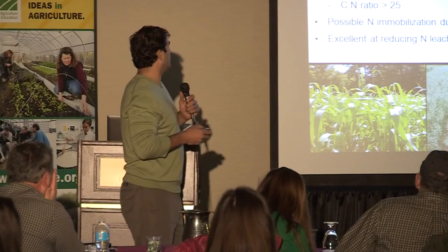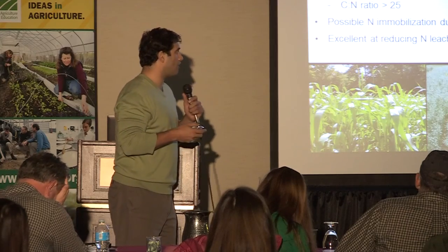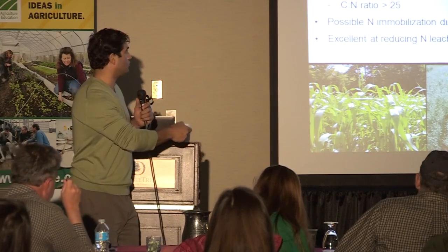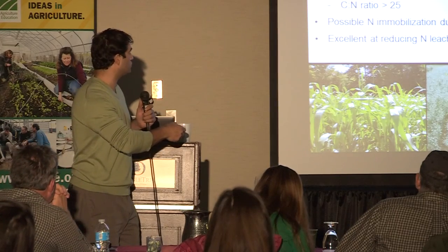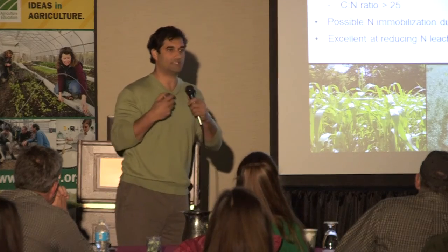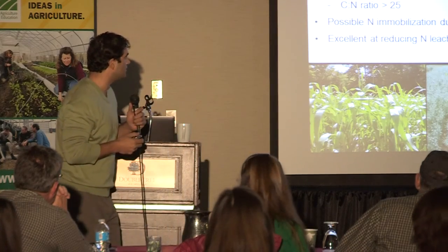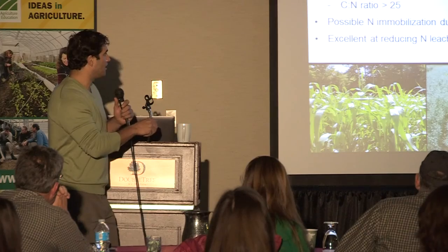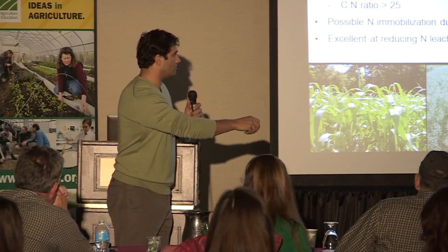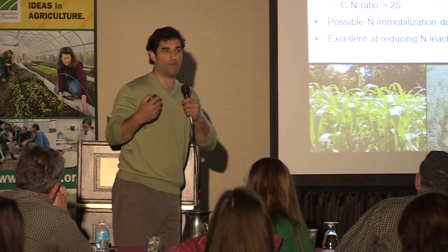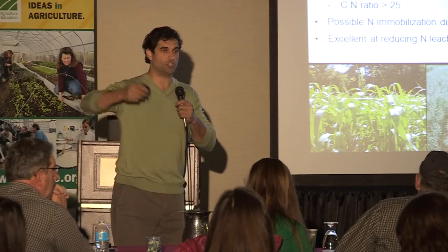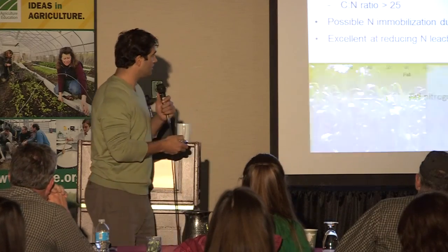Grasses are the other part of that equation. Cereals are the dominant cover crop choice for most producers, with tremendous nitrogen scavenging capabilities, very winter hardy, and lots of flexibility with establishment. They have high carbon to nitrogen ratios except when small — small cover crops can be in the 25 to 35 range, but as soon as they start to mature that C:N ratio goes way up.